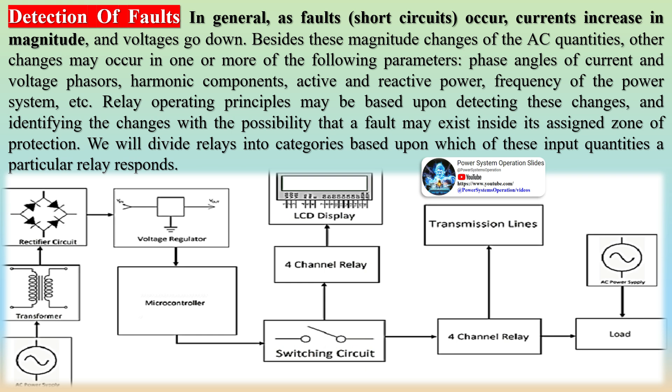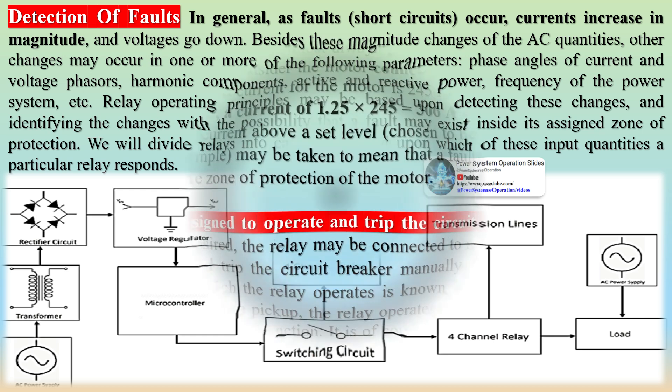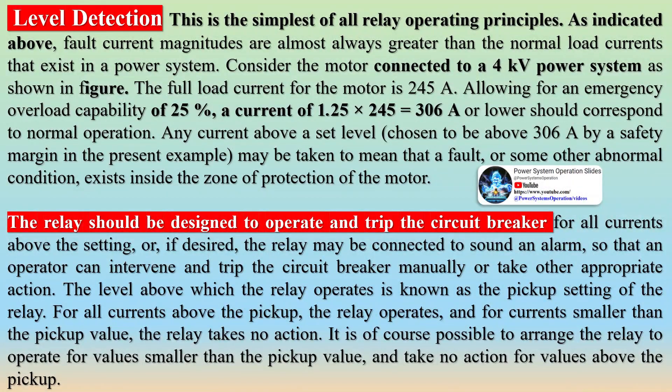For example, consider the relay shown in figure. If one were to use the magnitude of a fault current to determine whether some action should be taken, it is clear that a fault on the inside fault F1 or on the outside fault F2 of the zone of protection is electrically the same fault, and it would be impossible to tell the two faults apart based upon the current magnitude alone.